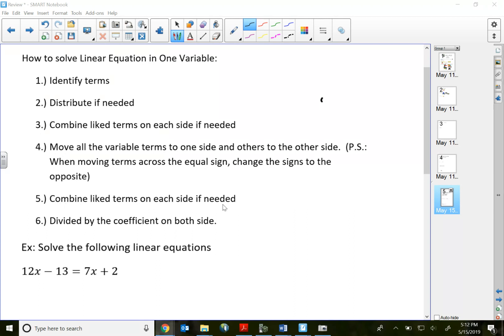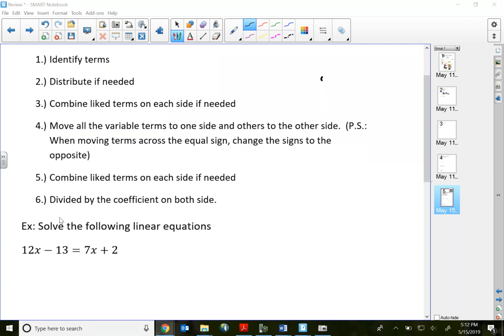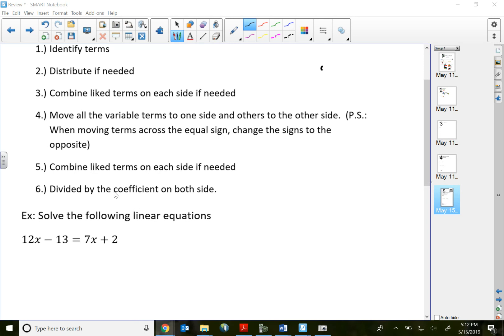Once you move them, you can combine like terms again on each side. And then the next step is always dividing both sides by the coefficient.